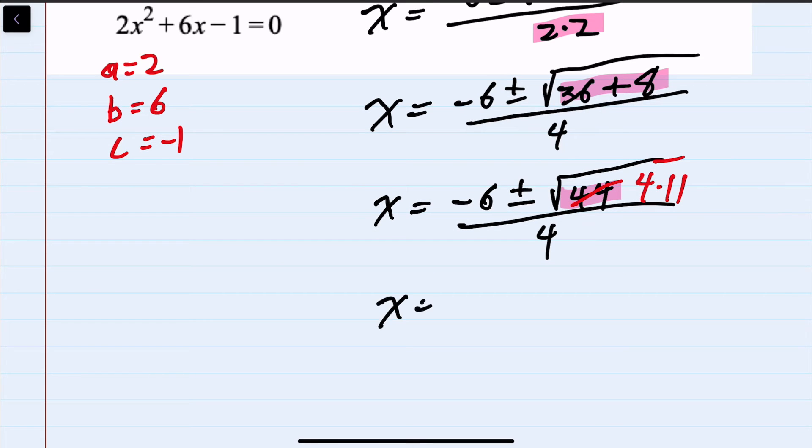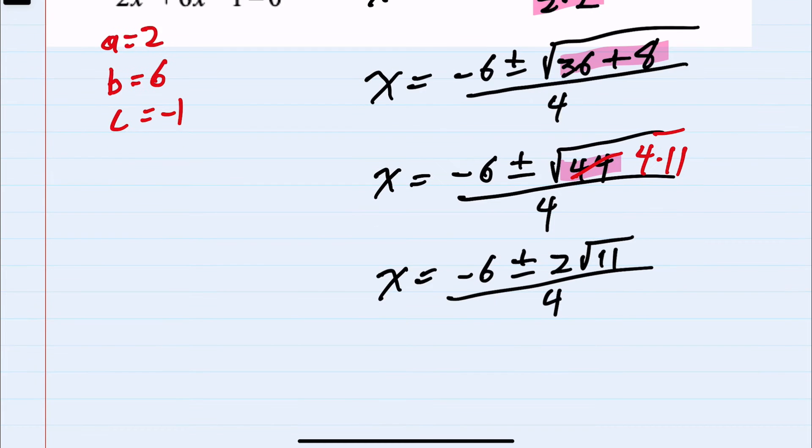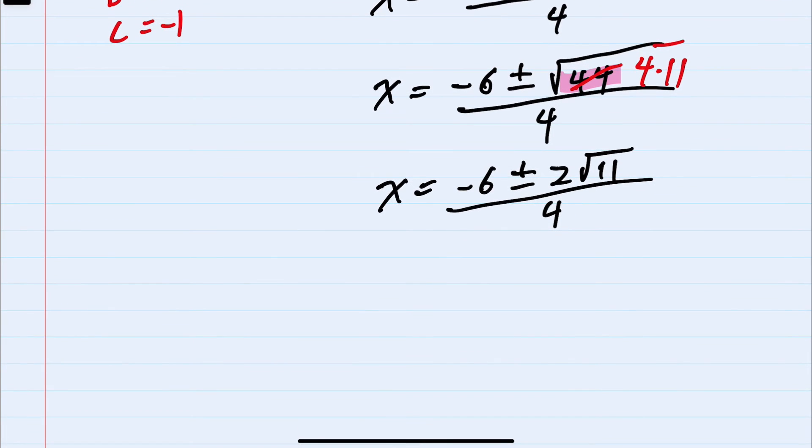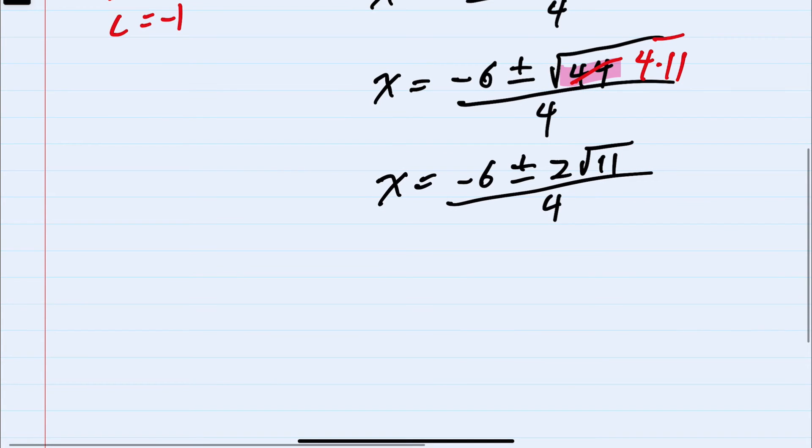So x equals negative 6 plus or minus 2 square roots of 11 over 4. And we recognize that we should be able to simplify the 6, 2, and 4. And to make sure I don't make any errors here, in order to cancel with the 4 in the bottom, I need to factor out the number that's going to cancel with it.